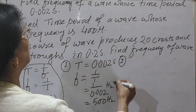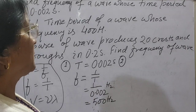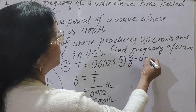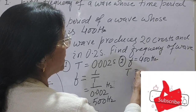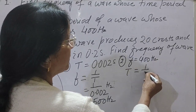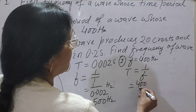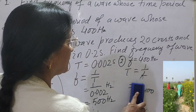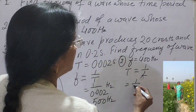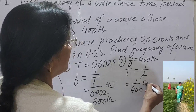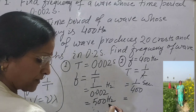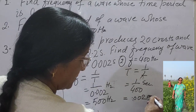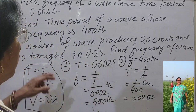Now solution of question number two: find the time period of a wave whose frequency is 400 hertz. Frequency is given as 400 hertz and we have to find the time period. Time period is equal to 1 upon frequency, so 1 by 400. After dividing we get the answer 0.0025 second. By this way we solve these two questions.